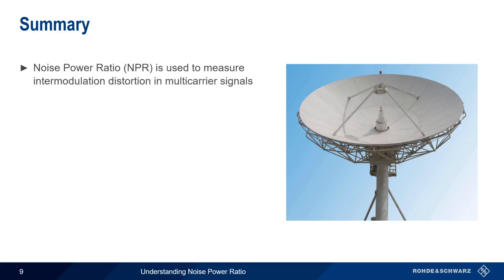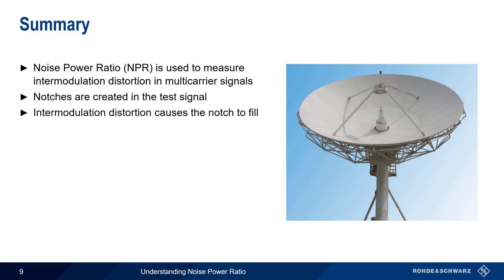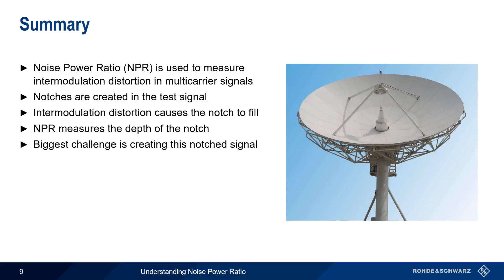So, in summary, Noise Power Ratio, or NPR, is used to measure the level of intermodulation distortion in multi-carrier signals, and is a very common measurement in satellite systems. The test procedure is very straightforward: notches are created in the test signal, and intermodulation within the signal components will cause the notch to fill. NPR is simply a measurement of the depth of the notch relative to the power of the carrier.